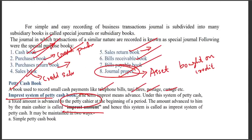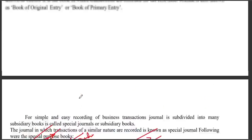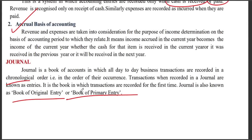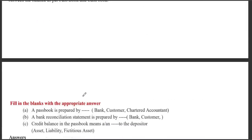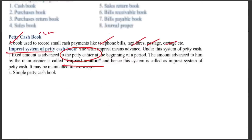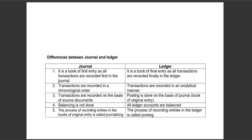What is the ledger? The ledger is the book of secondary entry. After journalizing, entries are posted to the ledger. The difference between the journal and the ledger is that the journal records in chronological order, while the ledger groups transactions by account. Source documents such as vouchers and bills support ledger entries.